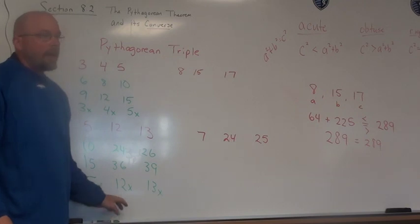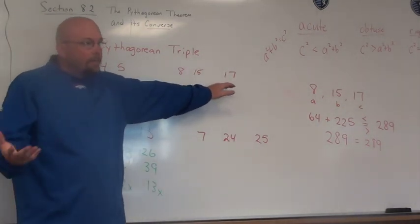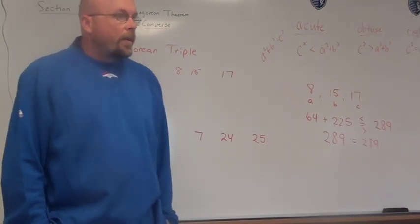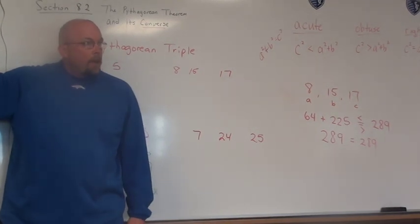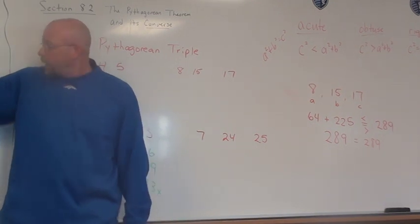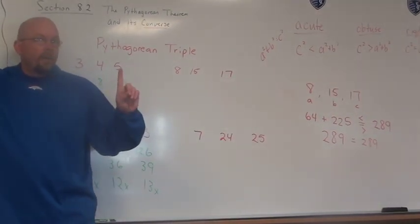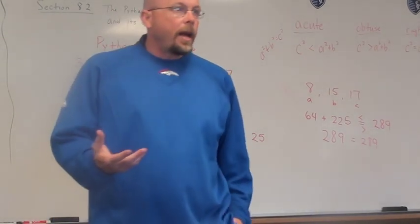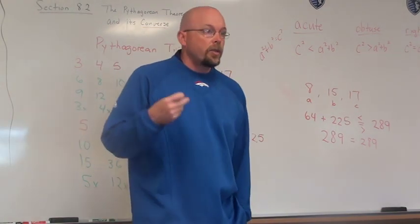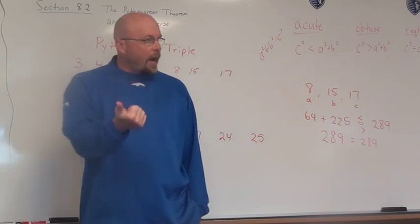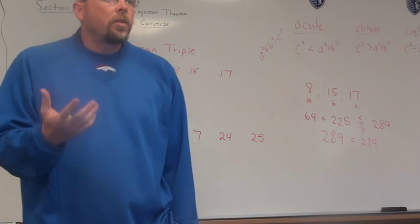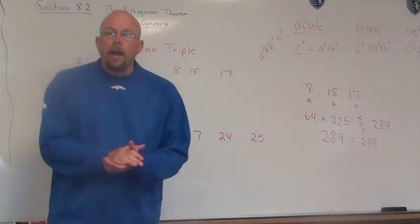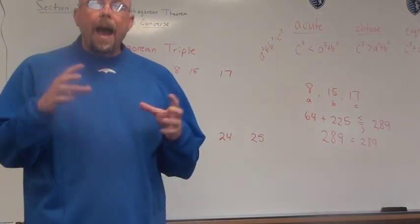We can do multiples of the others too — for example, 16, 30, 34 is a right triangle because it reduces to 8, 15, 17. Pythagorean triples are shortcuts. If you're looking at a problem and you recognize 12 and 13, you might remember the 5, 12, 13 triple. As you get these memorized, you'll use them a lot. Others can still use A squared plus B squared equals C squared to determine whether something's a right triangle. But the triples are just there to help — they're patterns we can recognize.